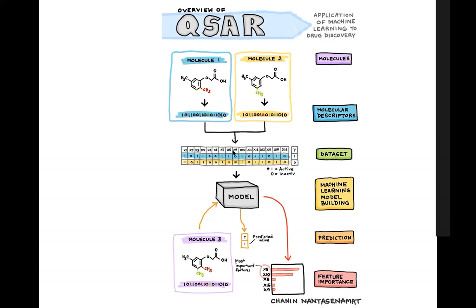The essence is correlating X and Y variables. With 16 X variables, we predict Y using the equation Y = f(X). We can then make a prediction for a new molecule — molecule three — by describing it using molecular descriptors. The model predicts molecule three has a value of one, meaning it is active. The model can also reveal the contribution of molecular features to biological activity.